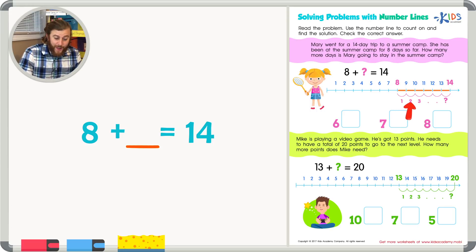Now let's just count how many jumps that took us. 1, 2, 3, 4, 5, 6. So the answer or the missing number is 6. Go ahead and check the correct answer and write that in. We can add 8 plus 6 by counting up and see that the correct answer is 14.